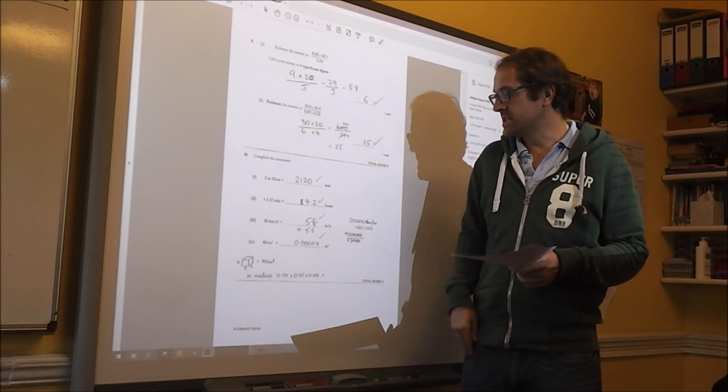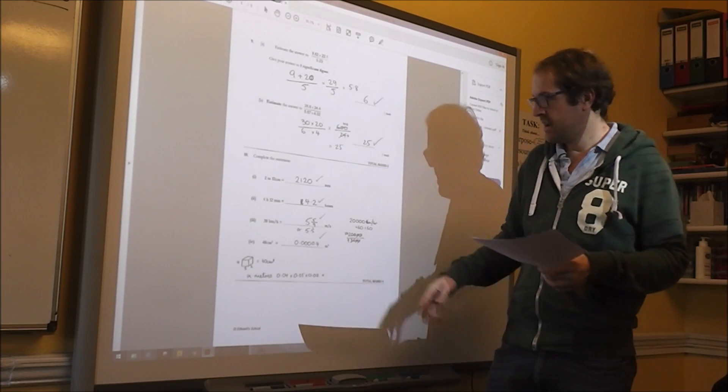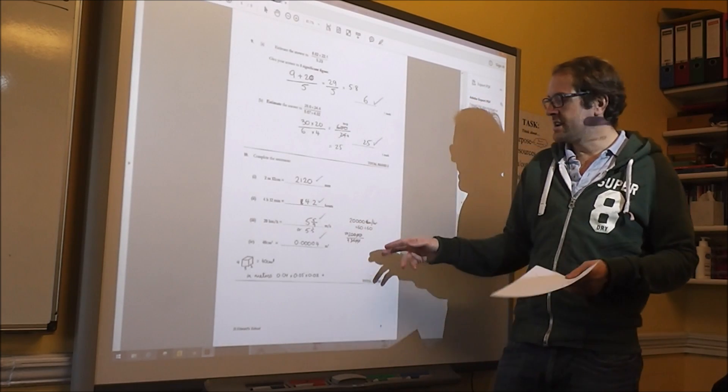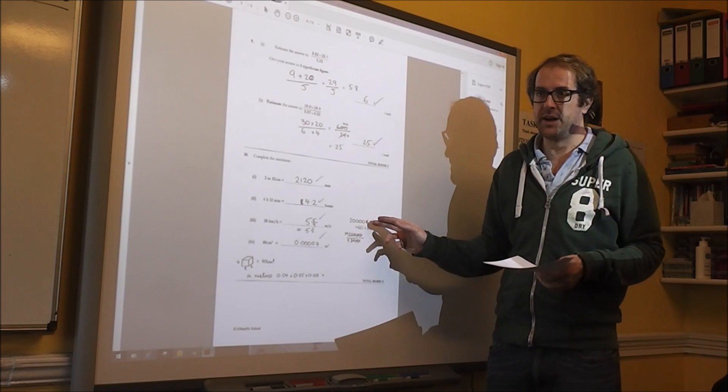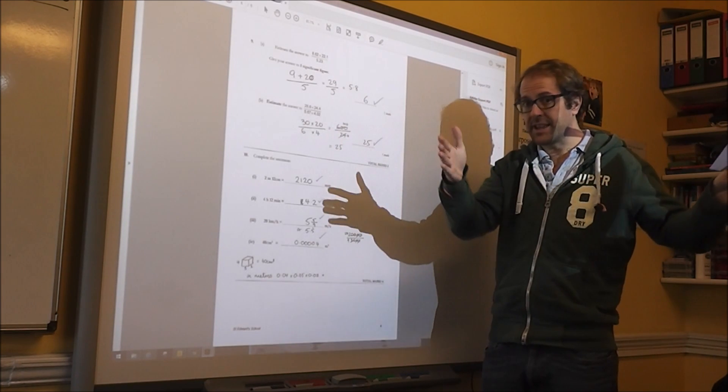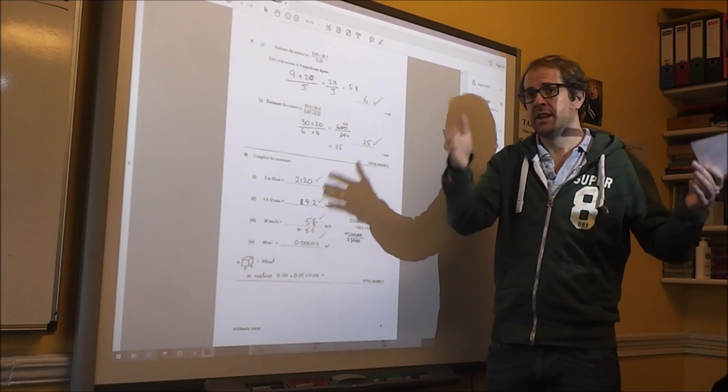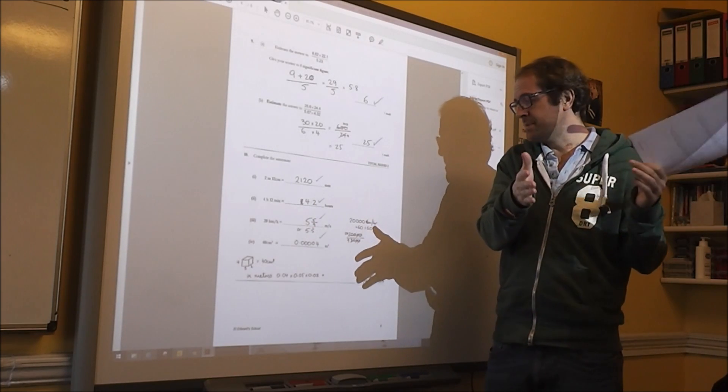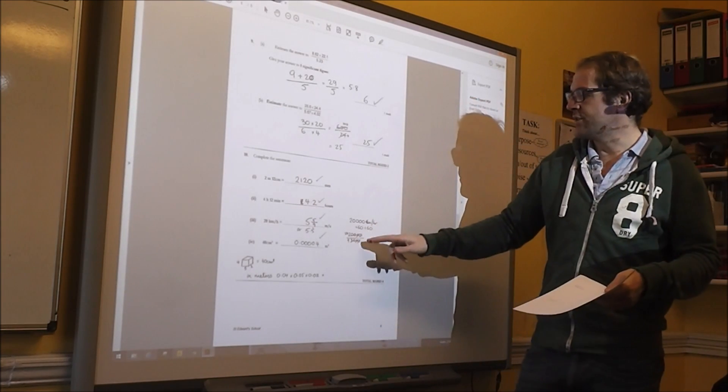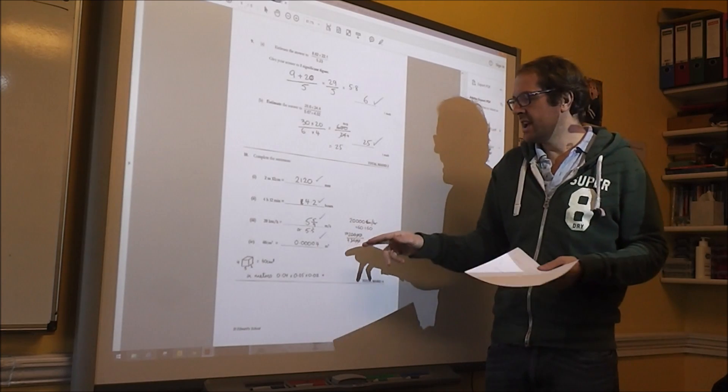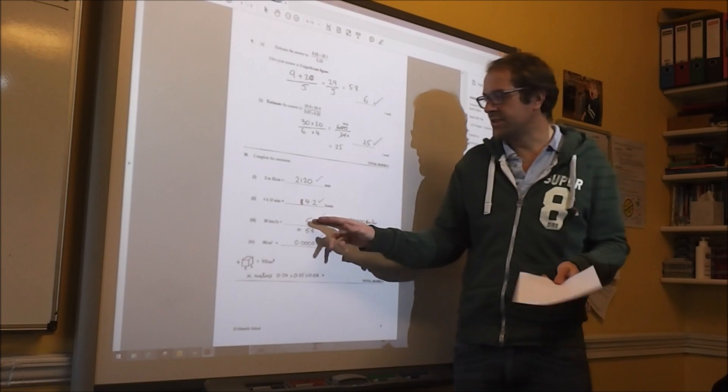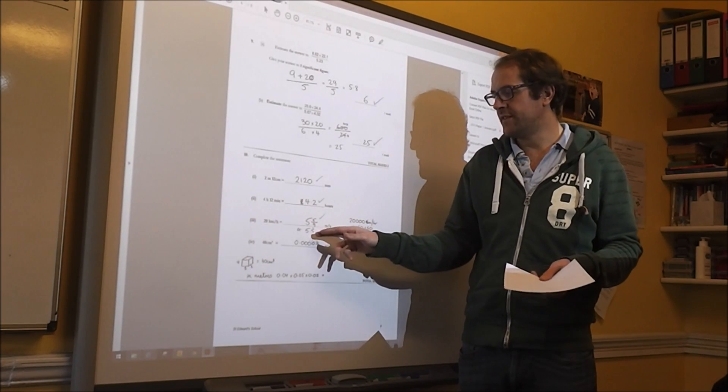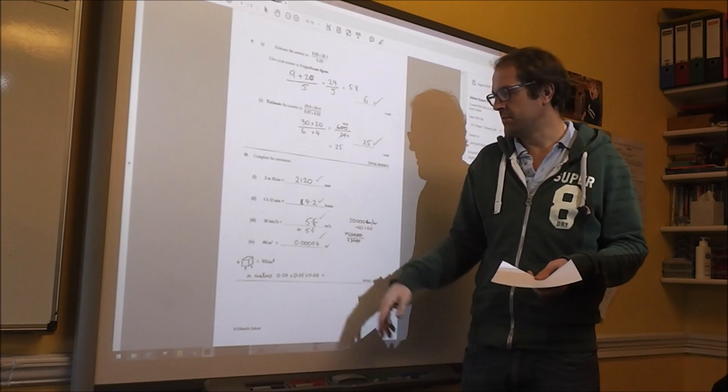20 kilometers per hour into meters per second, while it's 20,000 meters per hour divided by 60 meters per minute divided by 60 meters per second. So as a fraction, simplify everything, and you end up with 50 over 9, which is 5 and 5 ninths or 5.5 recurring meters per second.